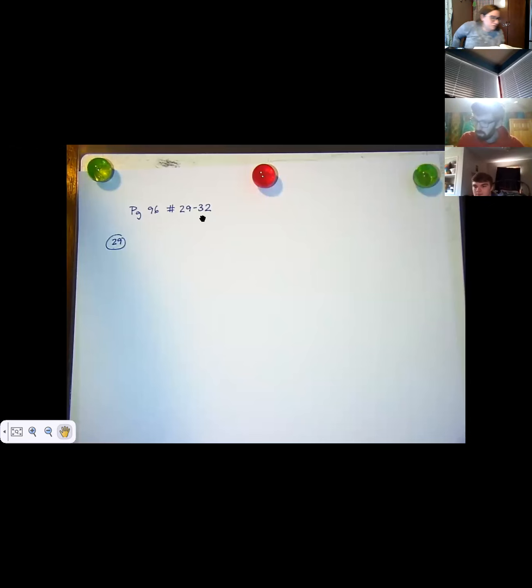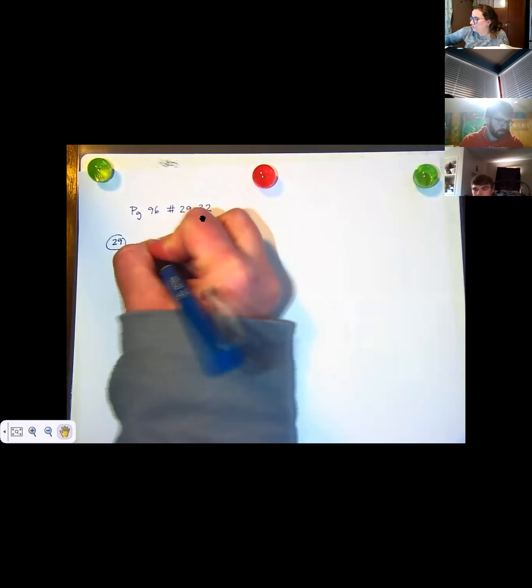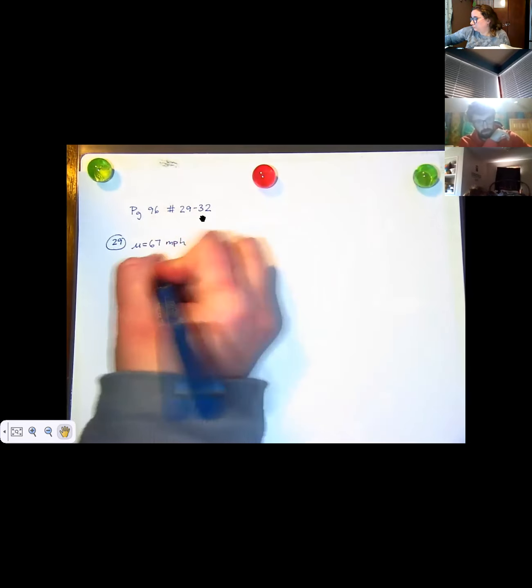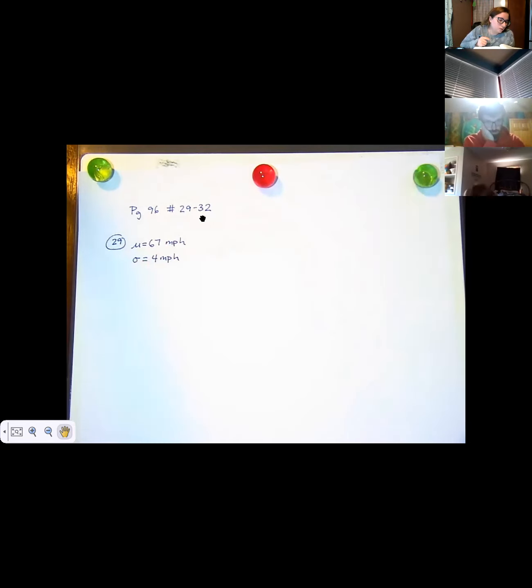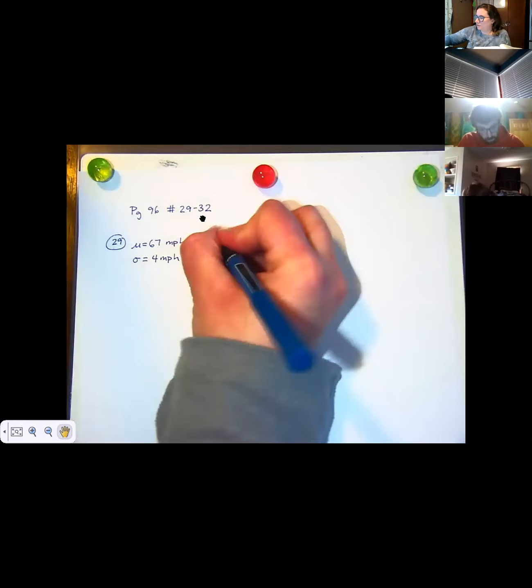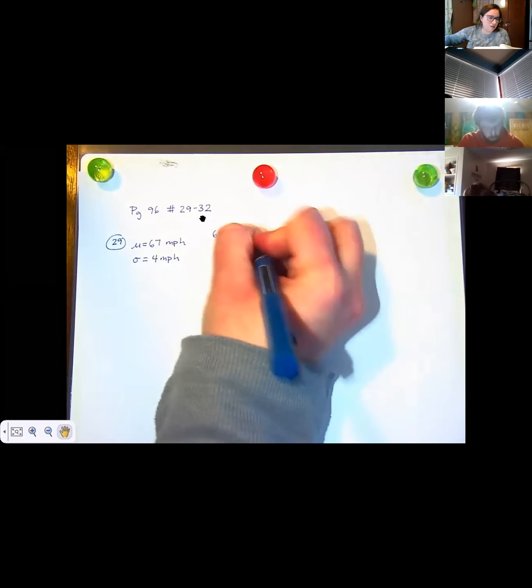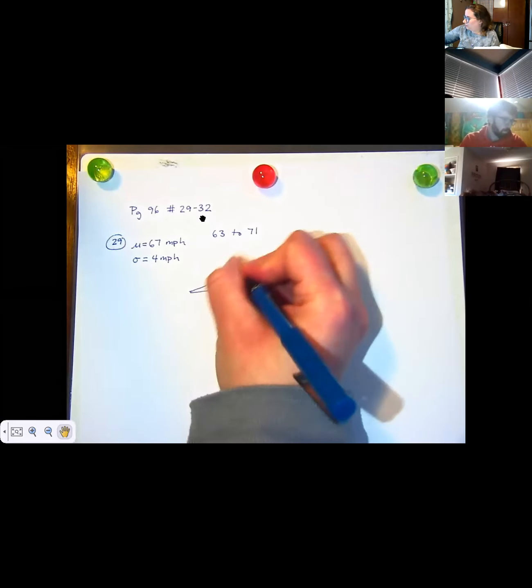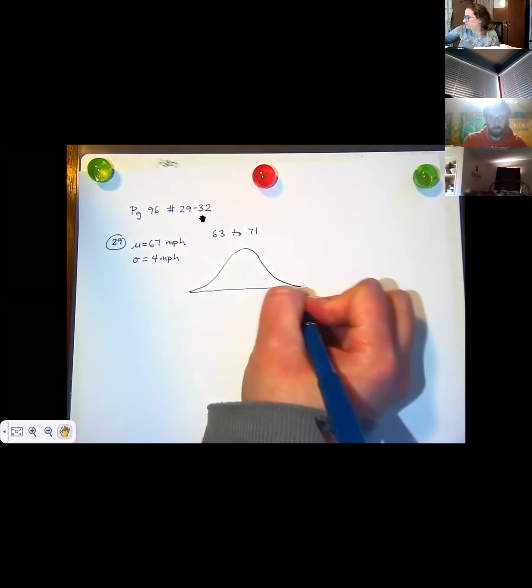All right. So for 29, it says that the mean speed of a sample of vehicles along a stretch of highway is 67 miles per hour. So I'm going to write mu equals 67 miles per hour. And it says the standard deviation is 4 miles per hour. And we're supposed to estimate the percent of vehicles that speeds are within 63 to 71. And it says that the data is bell shaped. So I'm going to quickly draw a little bell curve here. And so should you.